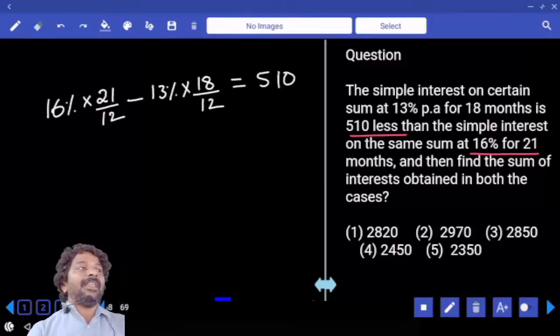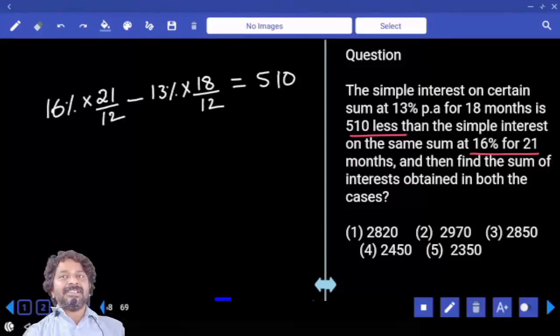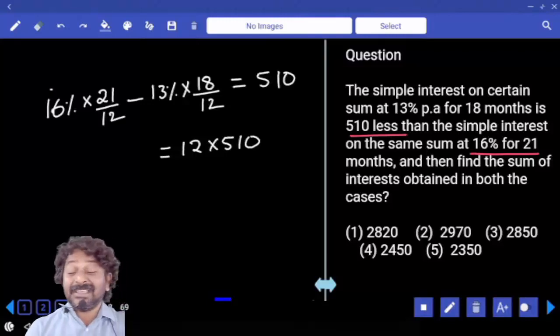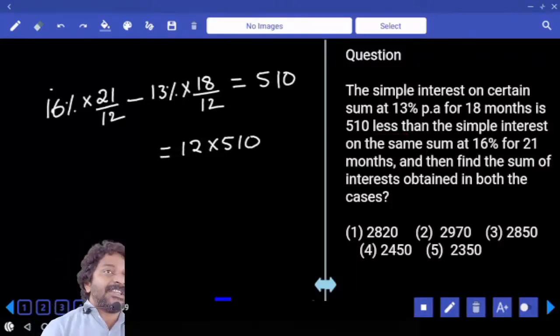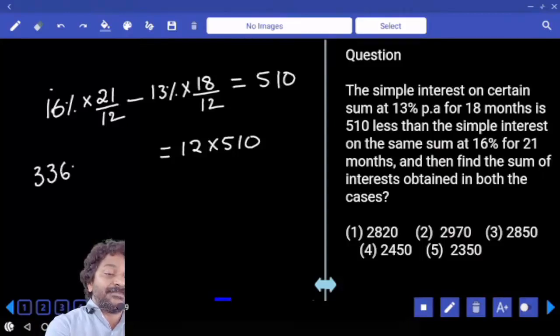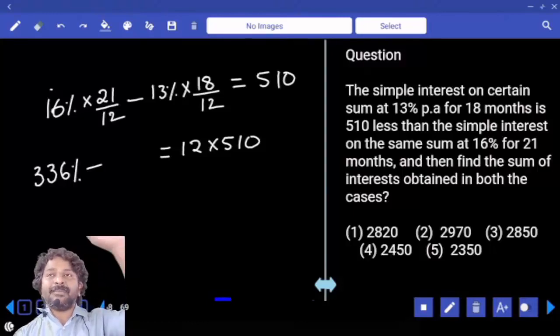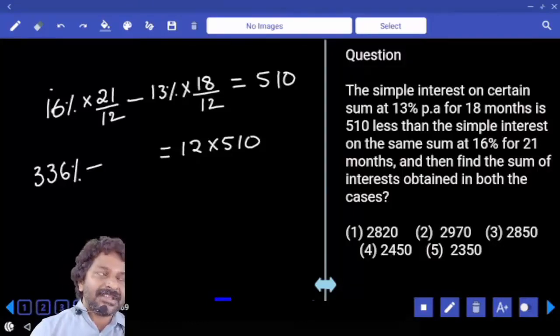Can we take 12 common in left hand side denominators and then take it to right hand side? Then right hand side value becomes 12 into 510. 16, 21 times, 20 times of 16 plus 1 time, that is 320 plus 1 time, 336%, minus 13, 18 times will go for 20 times of 13 minus 2 times, 260 minus 26.